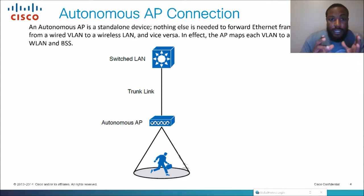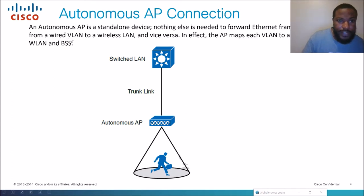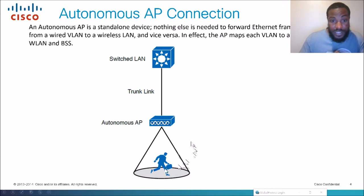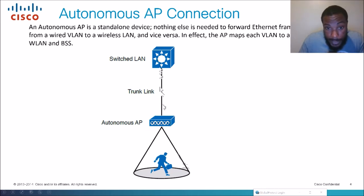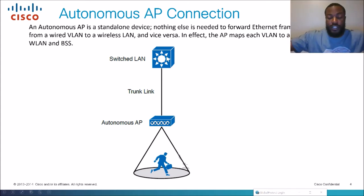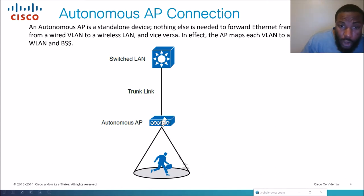An autonomous AP is a standalone device — nothing else is needed to forward Ethernet frames from a wired VLAN to a wireless LAN and vice versa. The AP maps each VLAN to a WLAN in a BSS, or Basic Service Set. You've got just the AP connected to a trunk link that carries all the VLANs through to the switch and on to the internet. This is fine and sufficient when you have it in autonomous mode with your VLANs configured.